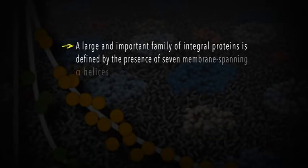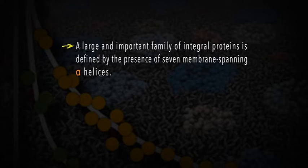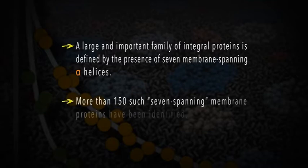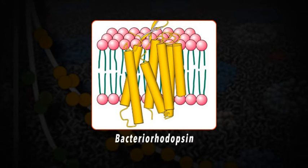Many other transmembrane proteins contain two or more membrane-spanning alpha helices. A large and important family of integral proteins is defined by the presence of seven membrane-spanning alpha helices. More than 150 such seven-spanning membrane proteins have been identified. This class of integral proteins is typified by bacteriorhodopsin, a protein found in a photosynthetic bacterium. Absorption of light by the retinal group attached to bacteriorhodopsin causes a conformational change that results in pumping of protons from the cytosol across the bacterial membrane to the extracellular space. The proton concentration gradient thus generated is used to synthesize ATP.